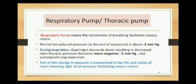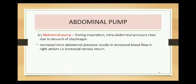The respiratory pump, or thoracic pump: the mechanism of breathing facilitates venous return. The normal intrapleural pressure at end-expiratory position is minus 2 mmHg and becomes more negative, minus 5, during inspiration. Because of Boyle's law, as pressure becomes more negative, volume increases. This pressure change is also transmitted to the inferior vena cava and the walls of the heart located in the thorax, so right atrial pressure is also lower, which facilitates venous return.